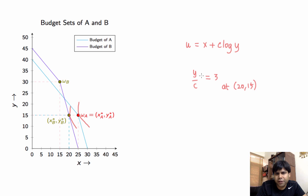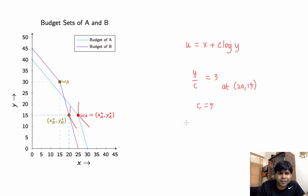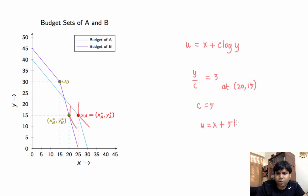Putting Y = 15 and setting the slope equal to 3, we get C = 5. Checking whether the slope of the IC at the point 25, 15 lies between 1 and 3: the slope is also 3 there, since Y is still 15. Therefore, U(X,Y) = X + 5·log(Y) is the utility function whose chosen points coincide with XA* YA* and XB* YB* at their respective budgets.